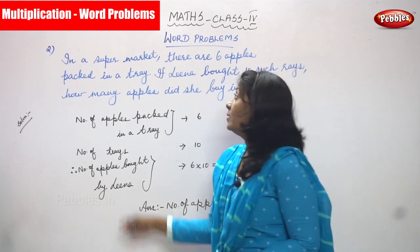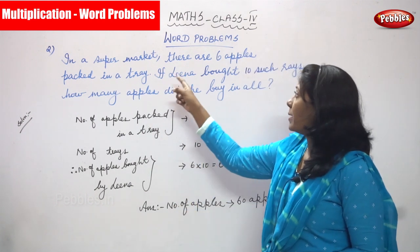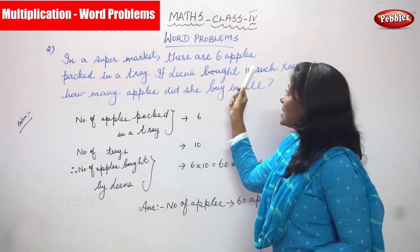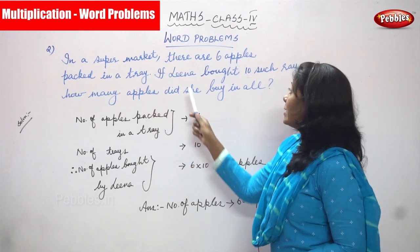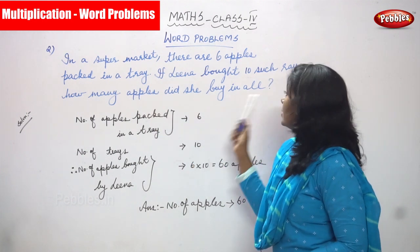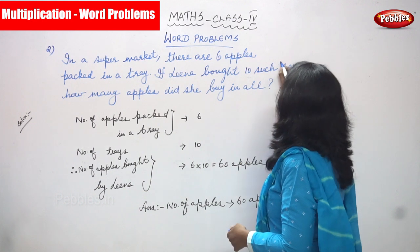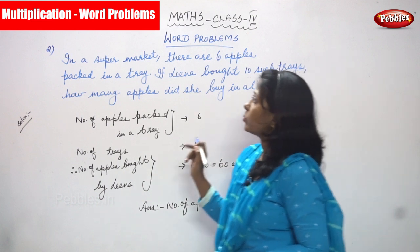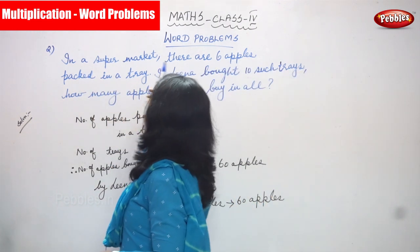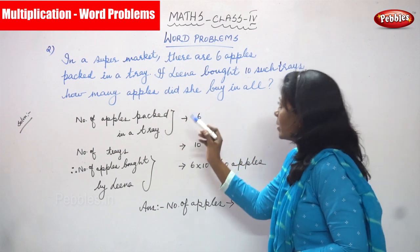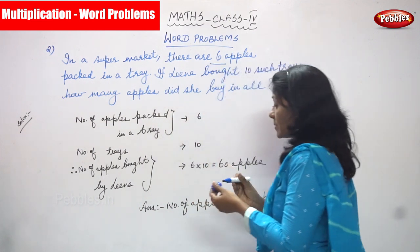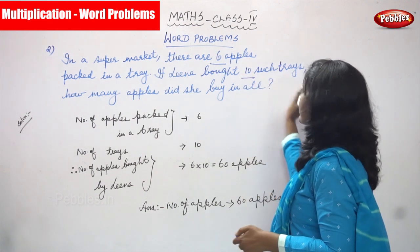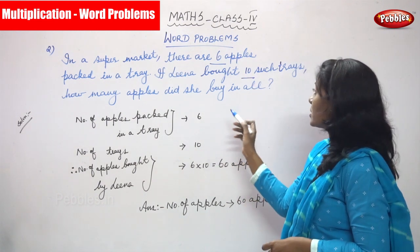Now we are going to see the second sum. In a supermarket, there are six apples packed in a tray. If Lena bought ten such trays, how many apples did she buy in all?